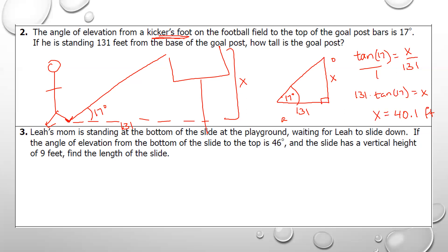Go ahead and try number three. Leah's mom is standing at the bottom of a slide on a playground waiting for Leah to slide down. The angle of elevation from the bottom of the slide to the top is 46 degrees. The slide has a vertical height of nine feet. Can you find the length of the slide? Try sketching a picture, put your numbers in your picture, and see if you can use trig to find the length of the slide.